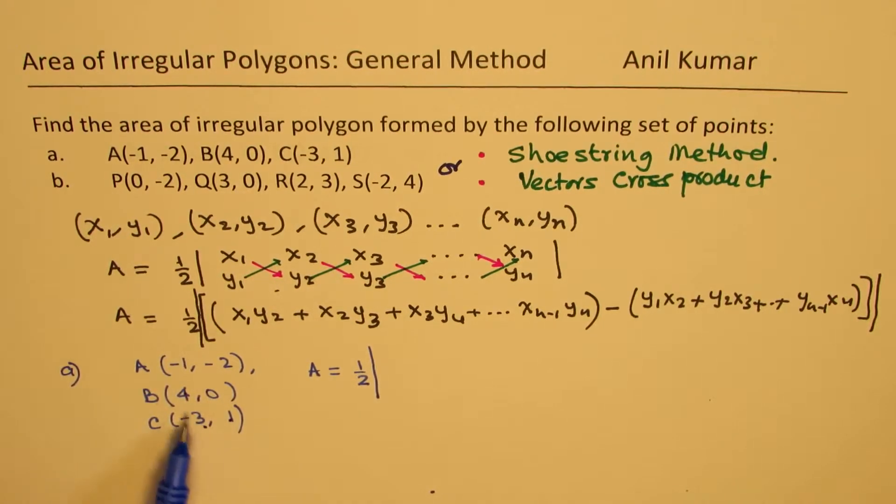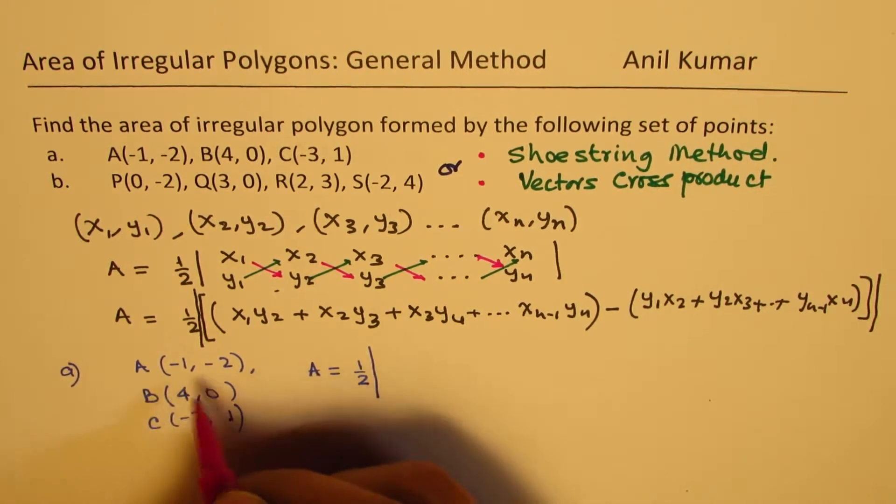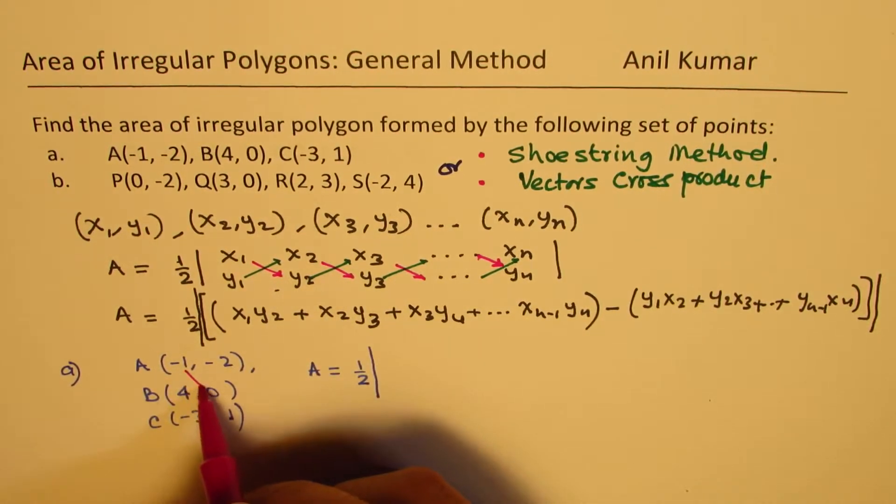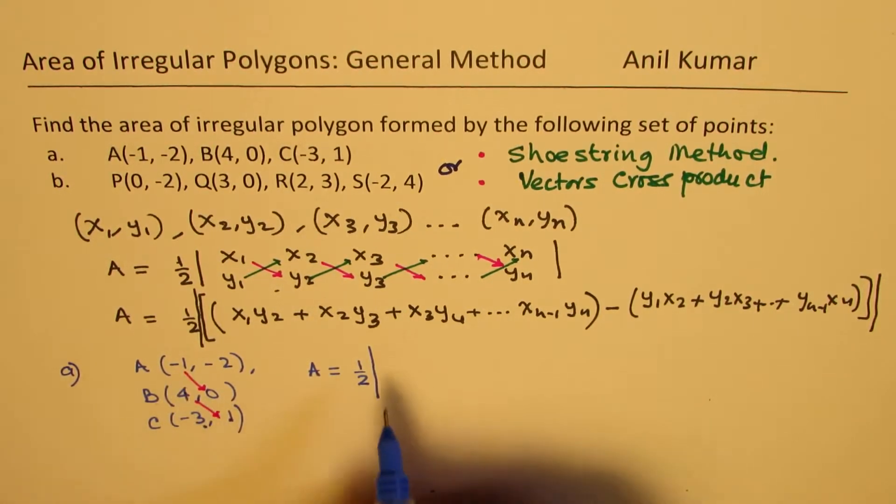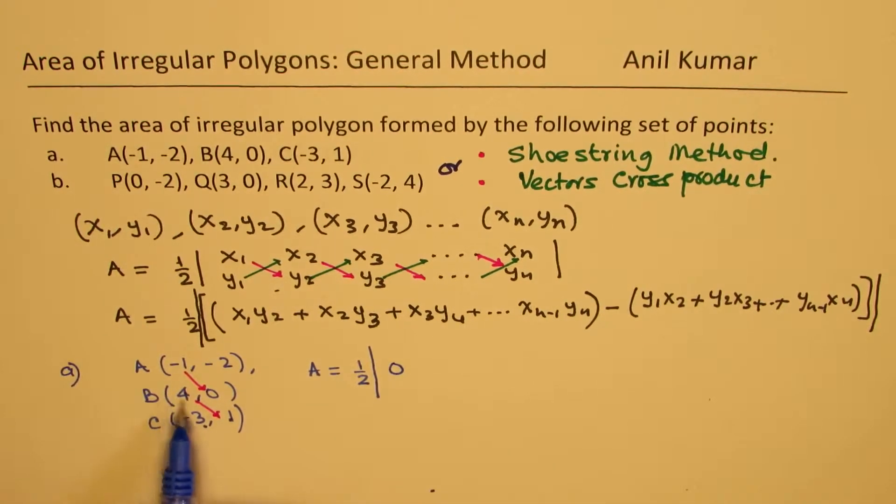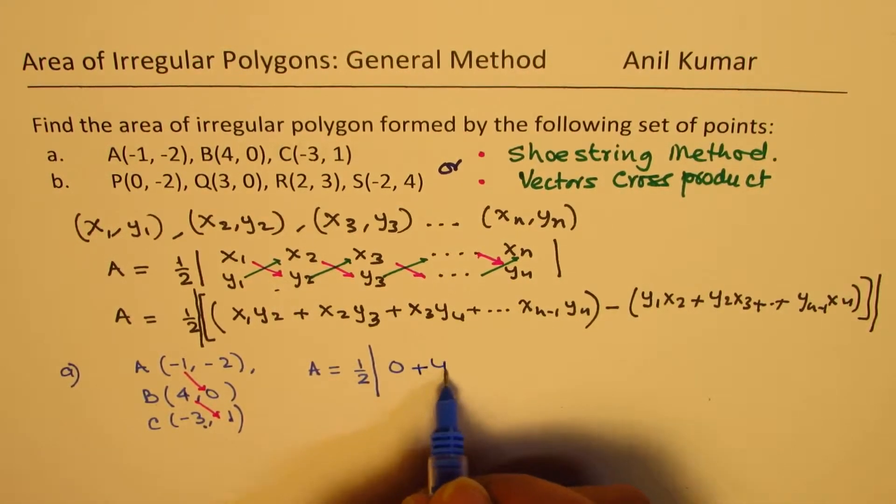We'll write minus 1 times 0. We are multiplying these values, which is the same form. We are multiplying these values, writing them as positive, minus 1 times 0 is 0, 4 times 1 is positive 4.